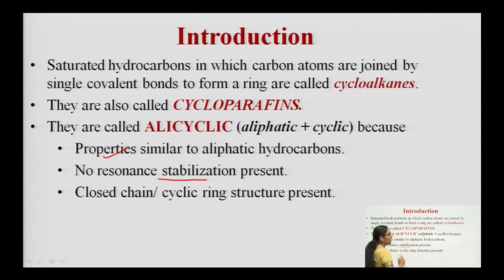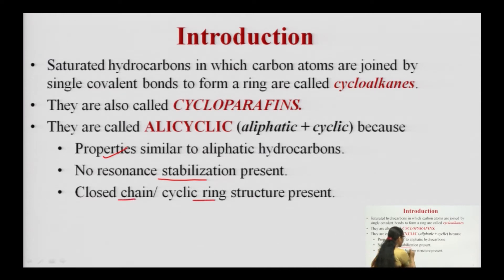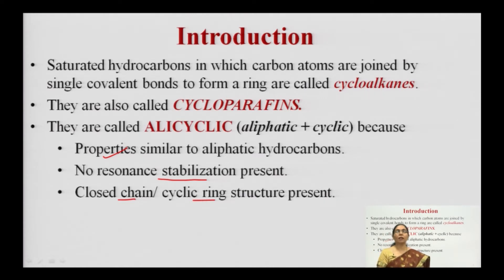Cycloalkanes do not have resonance stabilization. Resonance stabilization is the stabilization of organic compounds by delocalization of pi electrons. Since no double bond or triple bond is present, no pi electrons are involved in carbon-carbon bonding. Hence, no resonance stabilization is present. Although these compounds have a closed cyclic ring structure, they do not have resonance stabilization and their properties resemble more those of aliphatic compounds rather than aromatic compounds.